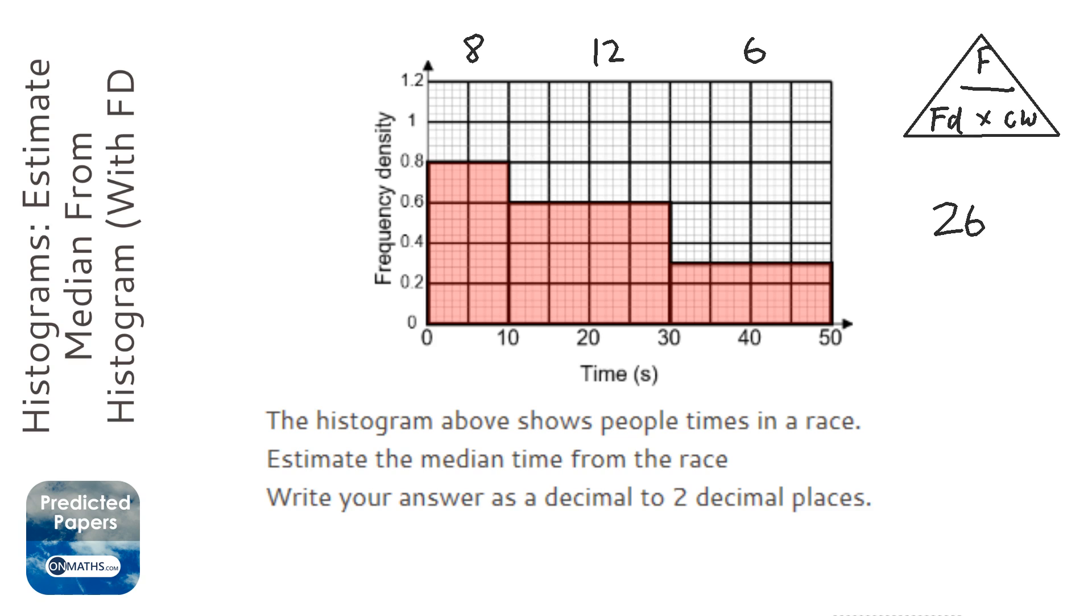Now to work out where the median is, we add one to that and halve it. But with continuous scale you can actually just halve it. Either you get the 13th or the 13.5th, which means the 13th and the 14th. The important thing is you realize which bar the median is in.